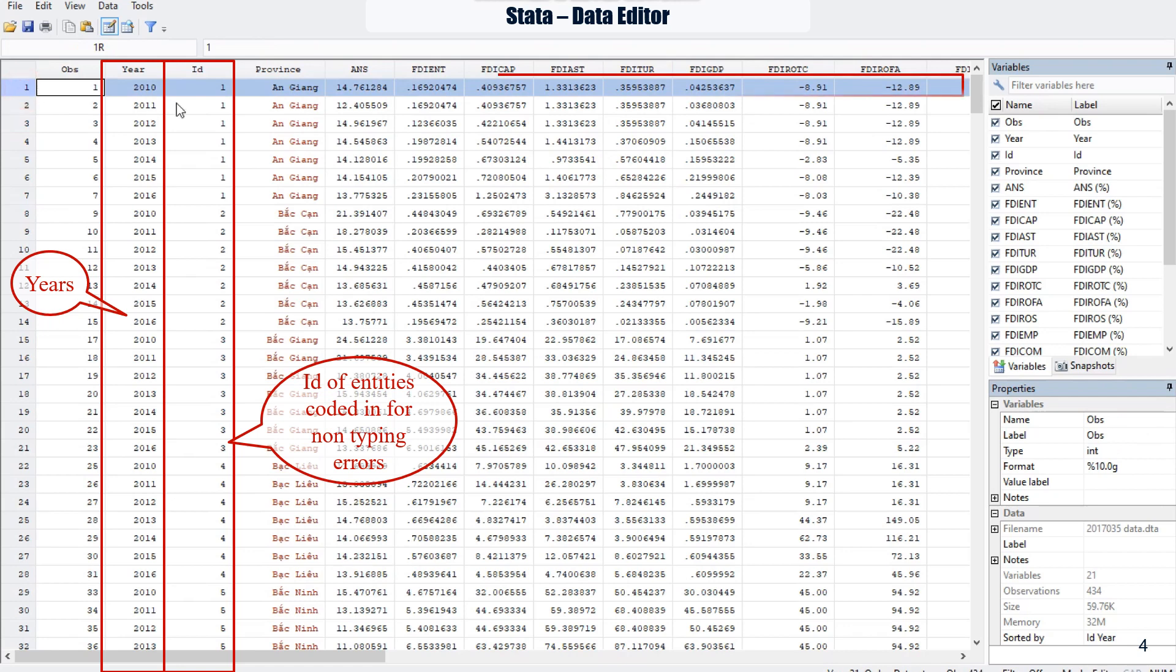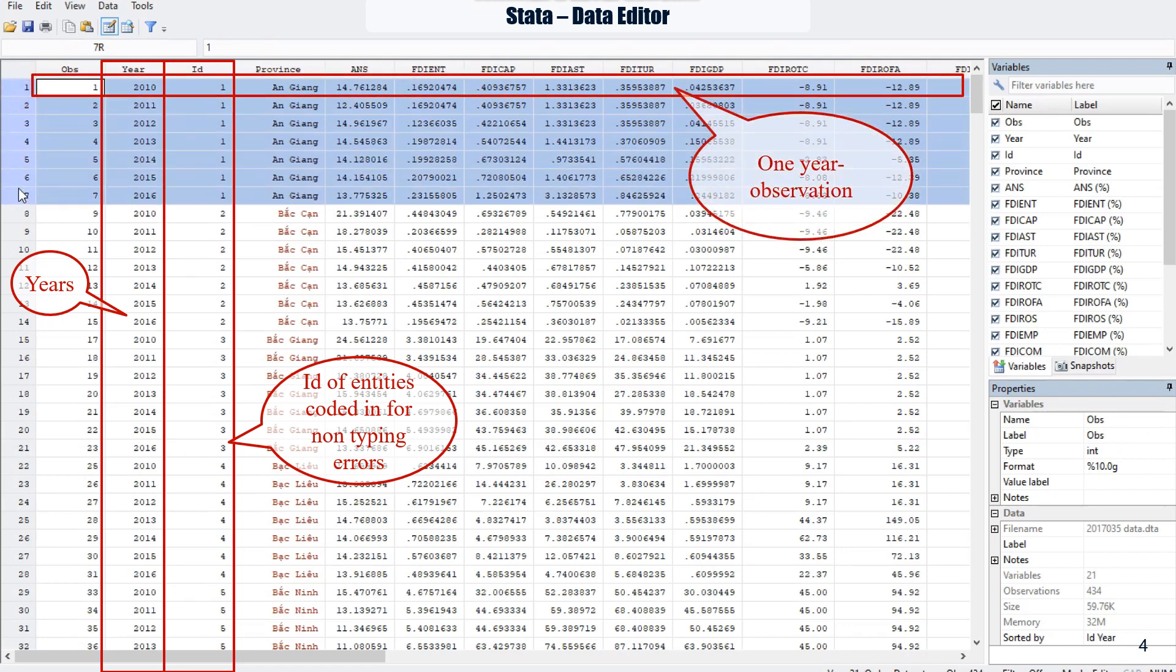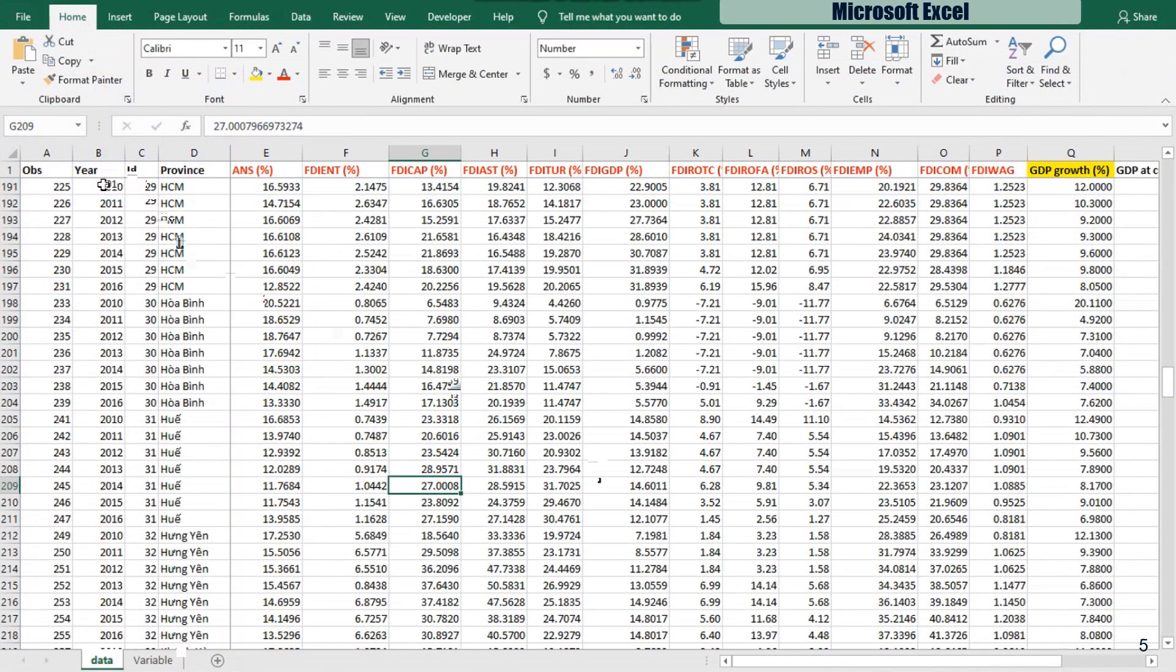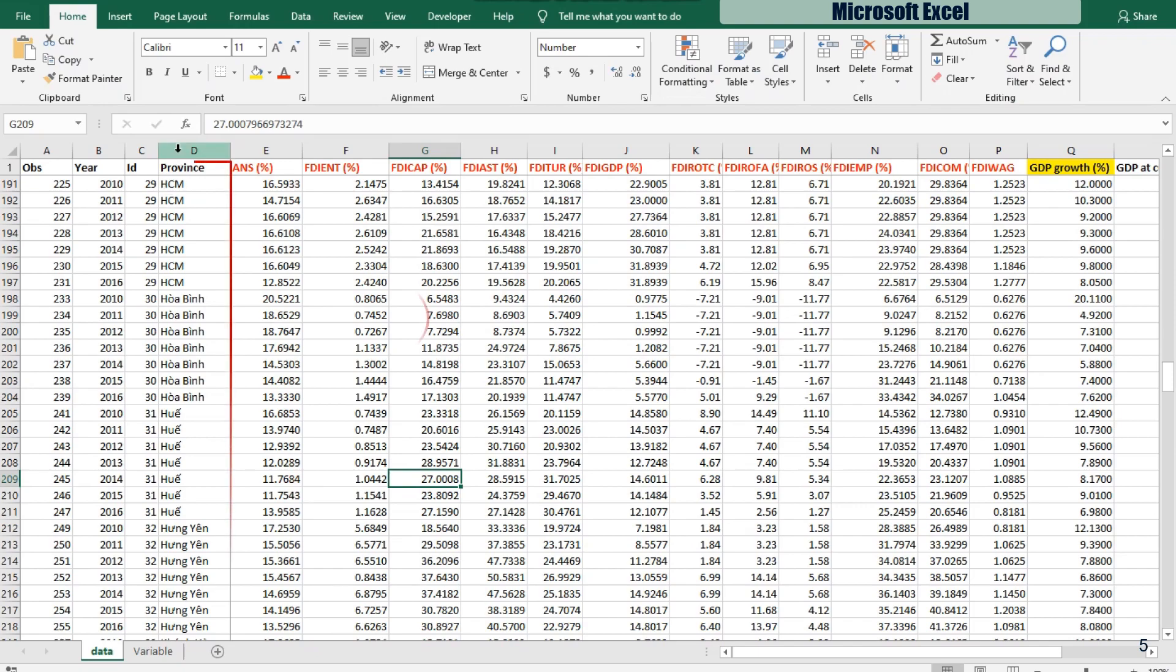Our panel data includes 434 year observations of 62 provinces as entities of our sample, each province has 7 year observations. This is similar when we observe panel data in Stata or Excel.